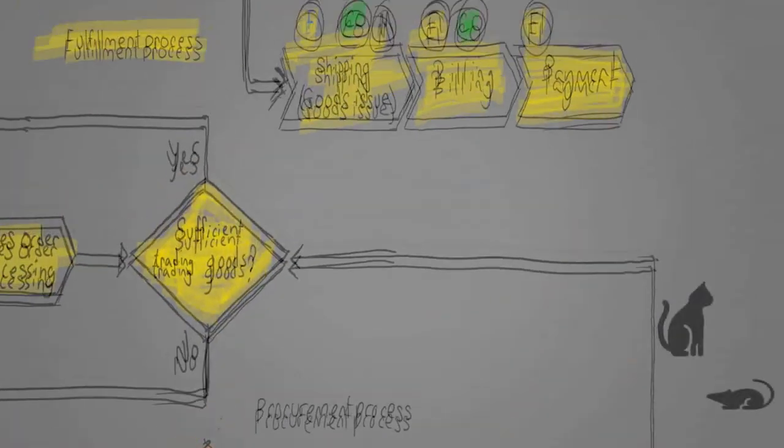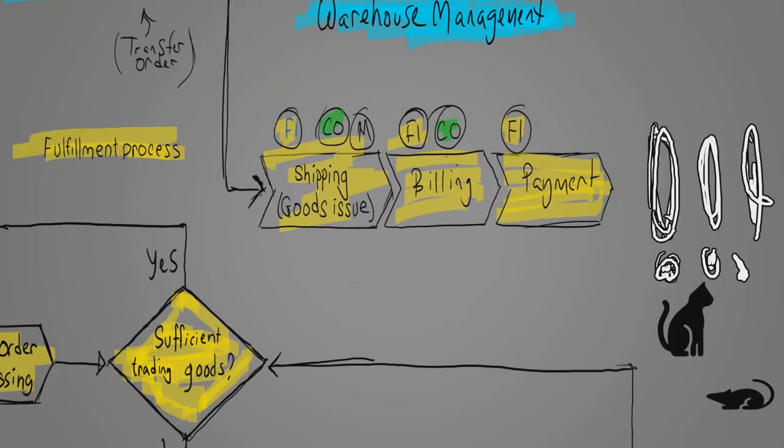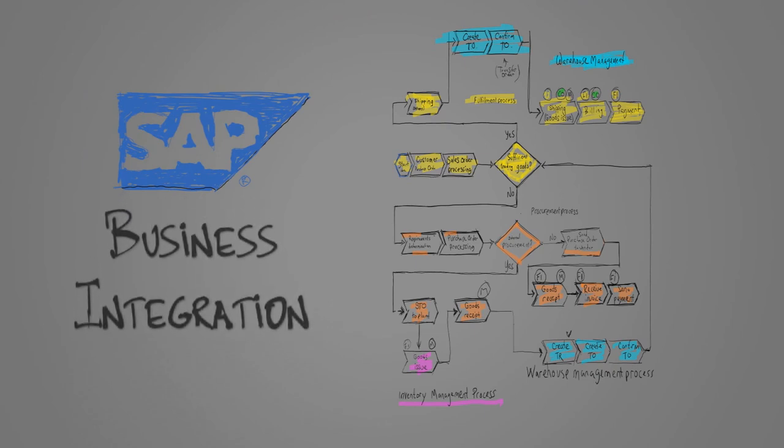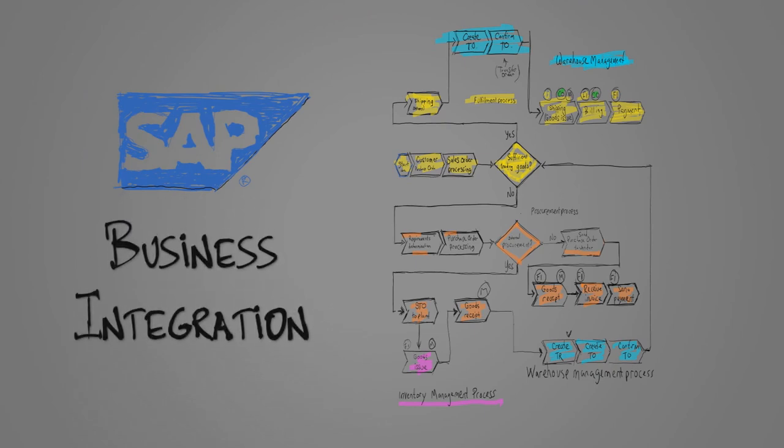So congratulations on the successful completion of your biggest order yet! Because your ERP system handles the entire process, decision making and collaboration between departments is efficient, and processes are executed efficiently over the whole system.